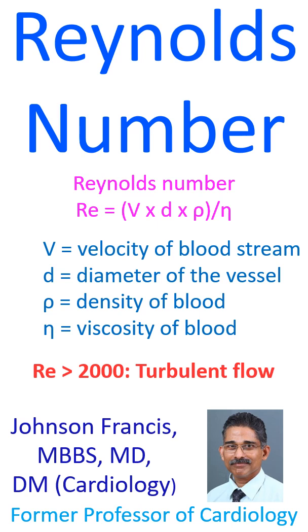When the number is above 2000, flow becomes turbulent. When viscosity eta increases, the number decreases.